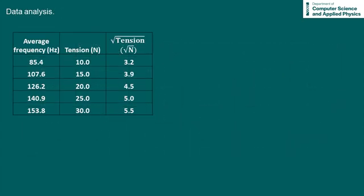Plotting our data points, you can see that we have a straight line. And when we apply a line of best fit, we get a straight line graph that passes through the origin. So our straight line graph has shown that frequency is directly proportional to the square root of tension.